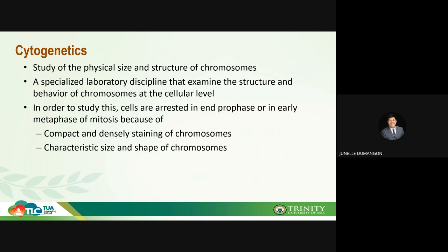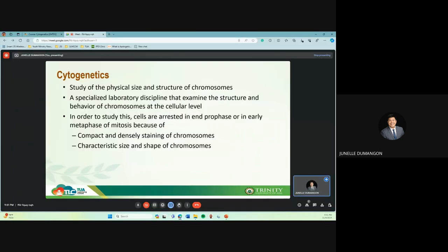In order for us to actually harvest these chromosomes, cells must first be arrested at the end of prophase or in early metaphase. This is the stage where the chromosomes are compact and already densely staining. Before mitosis, chromosomes do not yet take the classic form — they're still scattered around the nucleus. But in preparation for cell division, they condense into the classic chromosome form. We need to arrest them at prophase or metaphase so they will already have that classic appearance and characteristic size and shape, which allows us to create a karyotype.